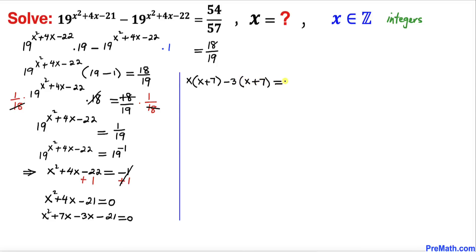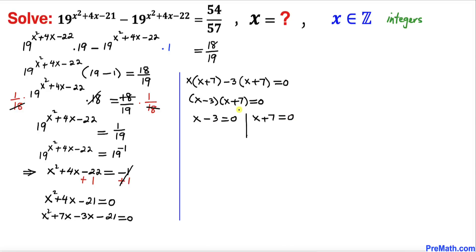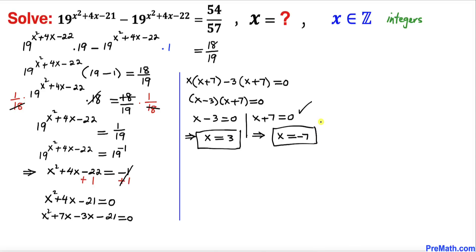Since (x plus 7) is common in both groups, we factor it out to get (x minus 3) times (x plus 7) equals 0. Setting each factor to zero: x minus 3 equals 0 gives x equals positive 3, and x plus 7 equals 0 gives x equals negative 7. So we have two solutions: x equals 3 and x equals negative 7, and they are indeed integers.